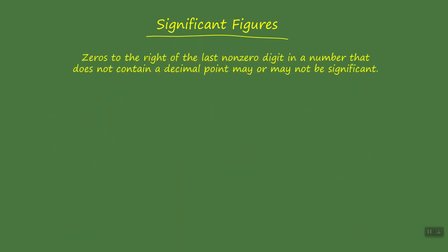We've arrived at guideline number five: zeros to the right of the last non-zero digit in a number that does not contain a decimal point may or may not be significant. The number 100,000 — we have the number one, a non-zero digit, followed by five zeros. What the guideline is telling us is that we do not know whether those zeros are significant or not.